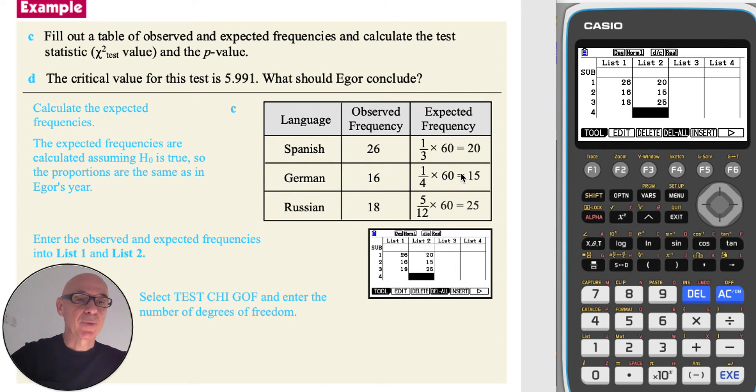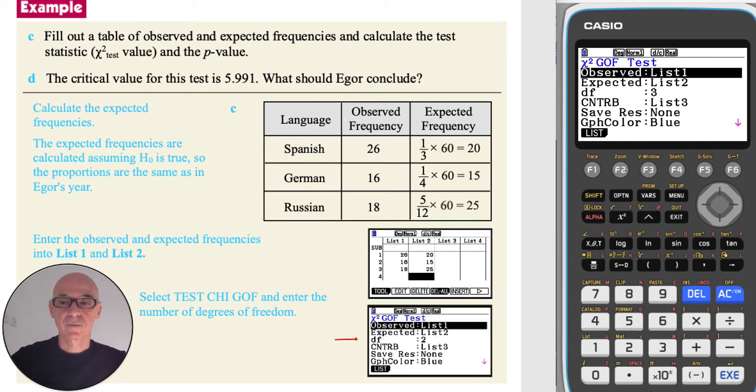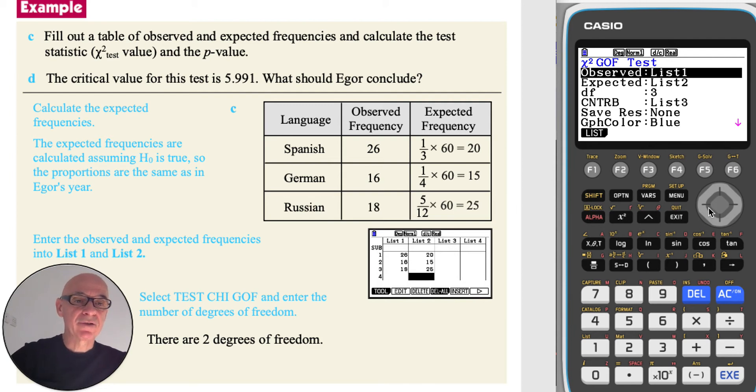Then if we press F6 twice to get back to the main statistics menu and press F3 for a test, F3 again for a chi-squared test, and F1 for a goodness of fit test. Scrolling down and setting the number of degrees of freedom to equal 2 and pressing execute, and then pressing execute again to perform the test.